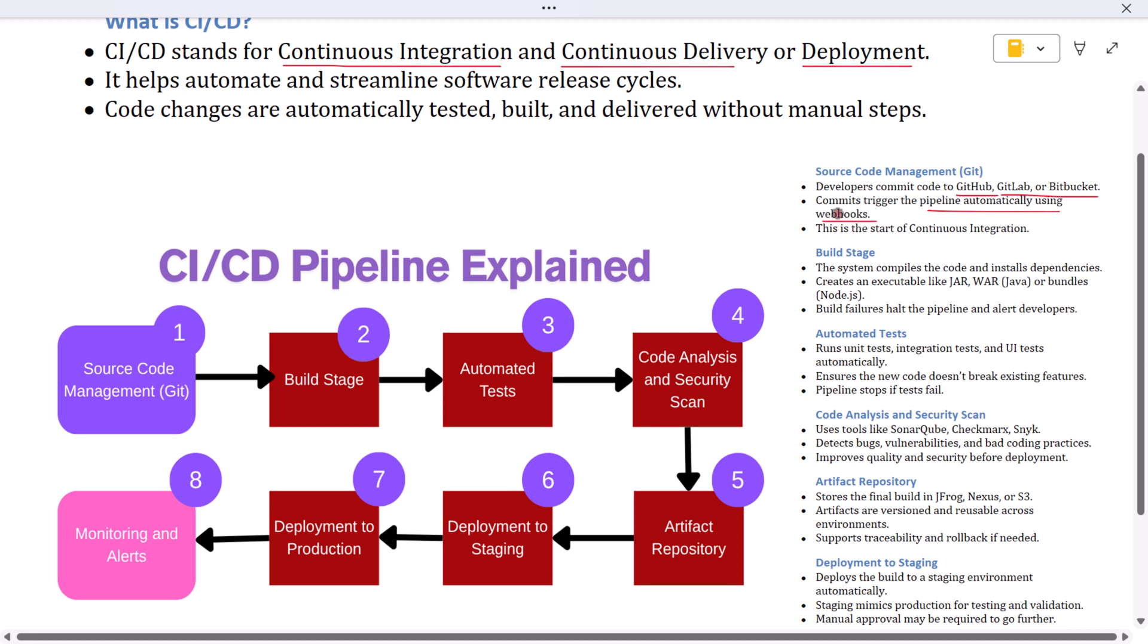Once the code is committed, it triggers the pipeline automatically. This is usually set up using a webhook that listens for changes in the repository, like when someone pushes a new feature or fixes a bug. This auto-triggering is a critical part of continuous integration.